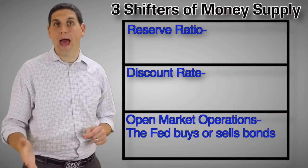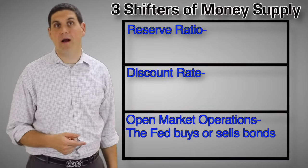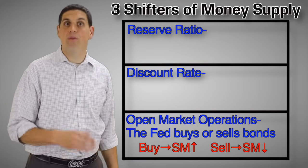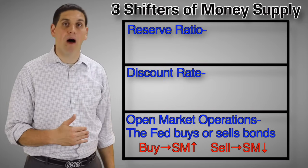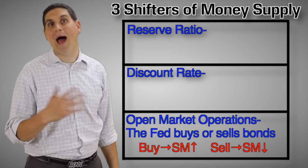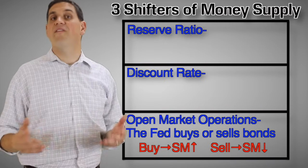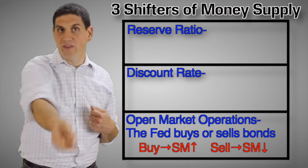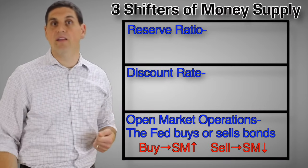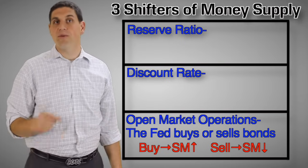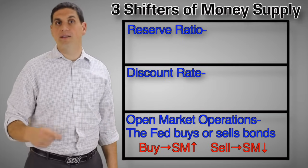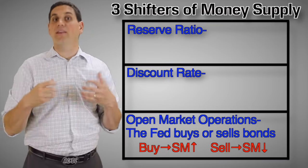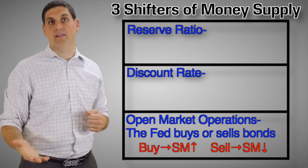There's a trick for remembering what happens to the money supply when it comes to open market operations. When the Fed buys bonds, the money supply gets bigger. When the Fed sells bonds, the money supply gets smaller — buy big and sell small. When the Fed buys bonds, it's taking bonds from the commercial banks and giving them money, which increases the money supply. If the Fed sells government securities or bonds to commercial banks, they're giving them the bond and taking money out of the system, which decreases the money supply.